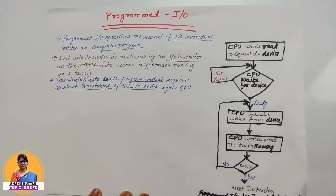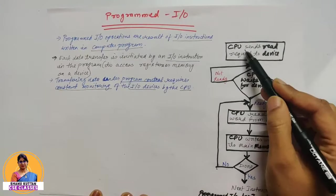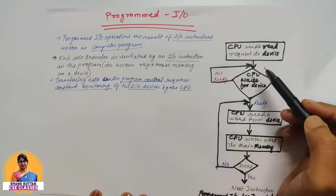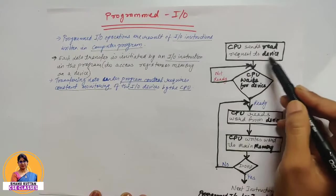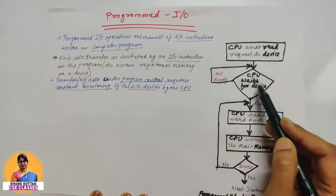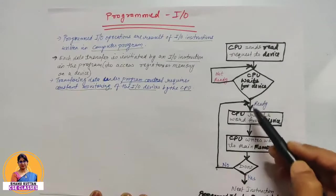Ye ek example hai programmed I/O for input output data transfer. Programmed I/O kaise perform hoota hai is diagram se hum samajh sakte hai. CPU ne suppose sabse pehle send kiya read request to the I/O device ki woh I/O devices pe se kuch data read karna chahta hai. To CPU sends a read request to I/O device. Read request send karne ke baad, CPU wait karega I/O device ke liye ki woh ready ho jaye, toh woh se data transfer karaye.